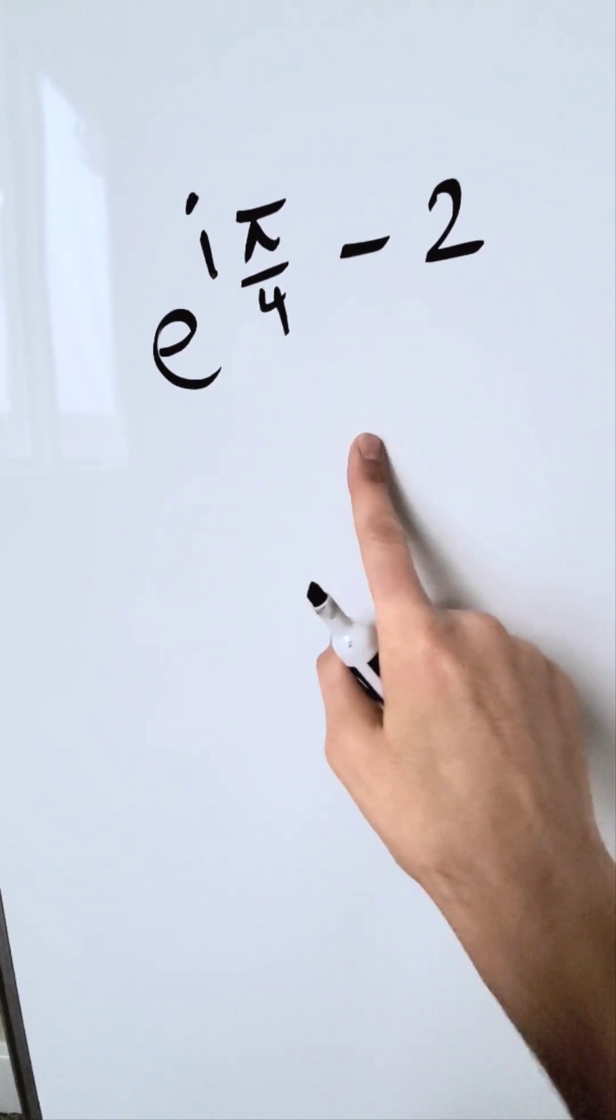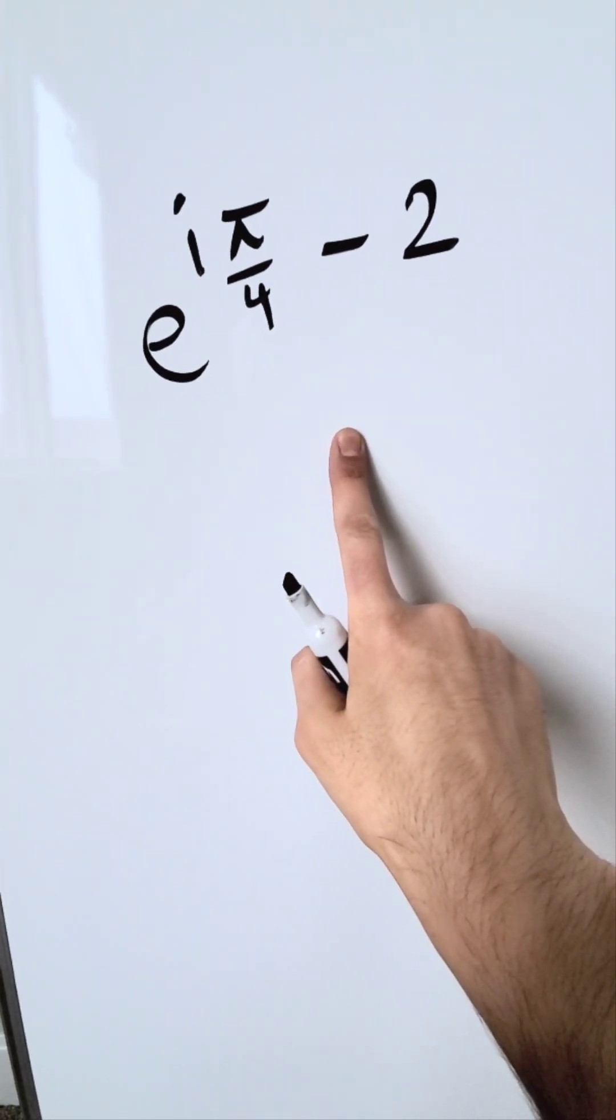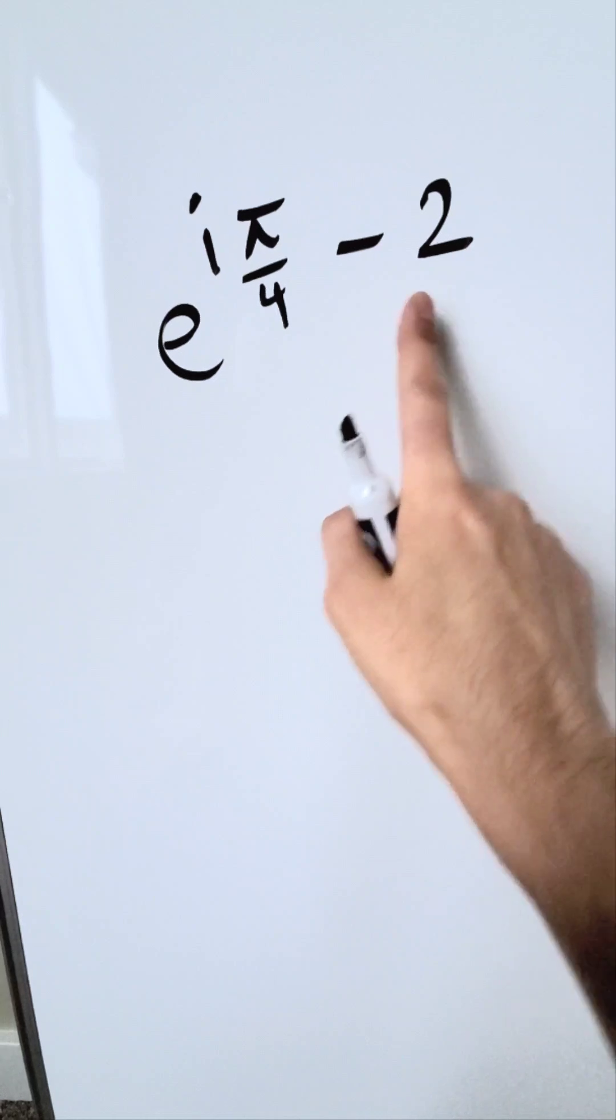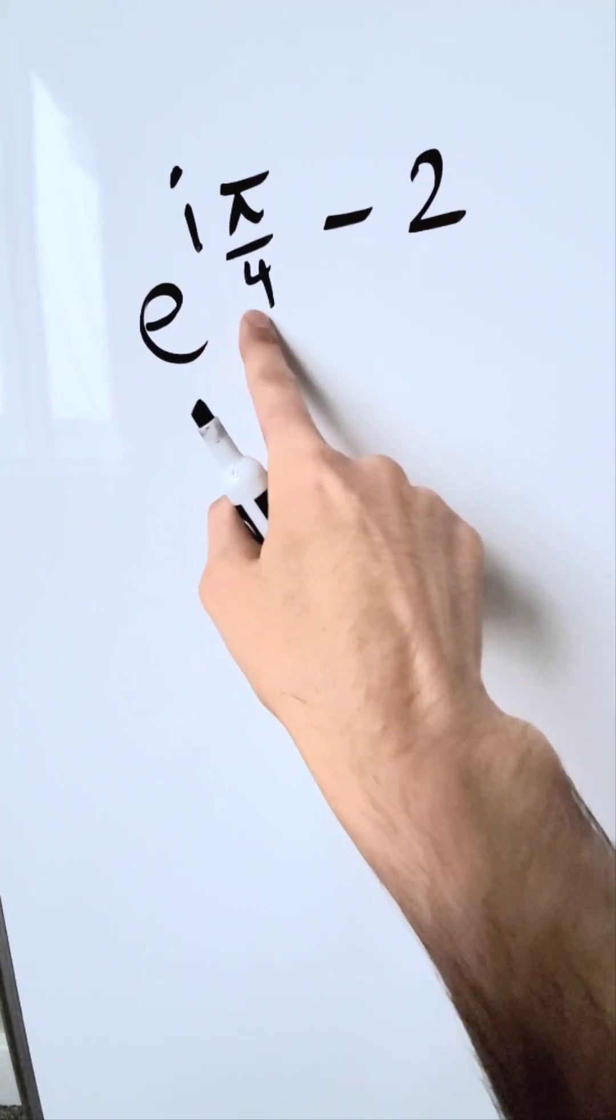We are examining and evaluating this expression, e exponent i pi over 4 minus 2. This right here is your base, everything here is your exponent.